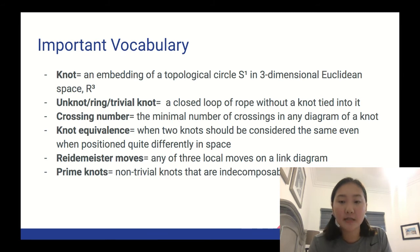A crossing number is the minimal number of crossings in any diagram of a knot. Knot equivalence is when two knots should be considered the same, even when positioned quite differently in space. Reidemeister moves are any of three local moves on a link diagram. And prime knots are non-trivial knots that are indecomposable.